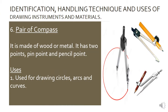Pair of compass is made of metal or wood. It has two points: a pin point and a pencil point. The pencil point is used to fix your pencil while drawing. Uses: It is used for drawing circles, arcs, and curves.